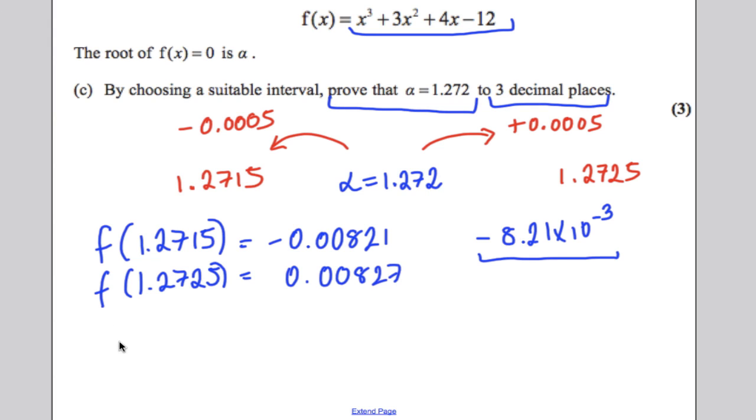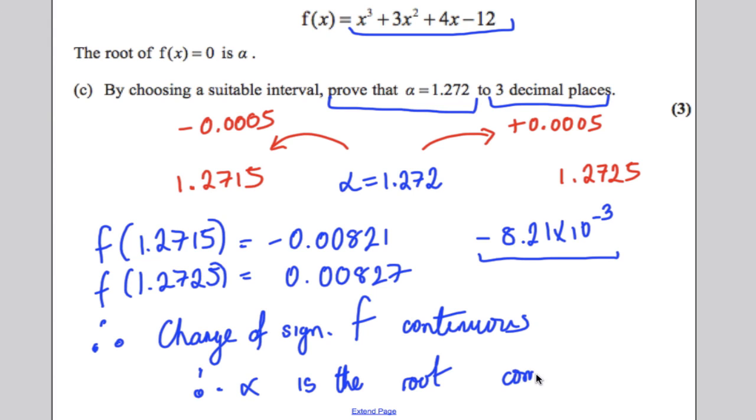You must state therefore a change of sign. You must also state that F is continuous. Therefore, alpha is the root correct to three decimal places.